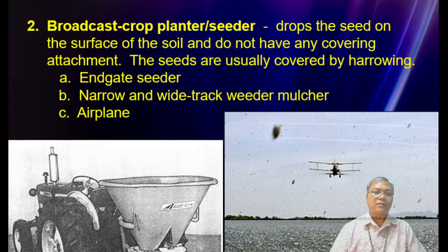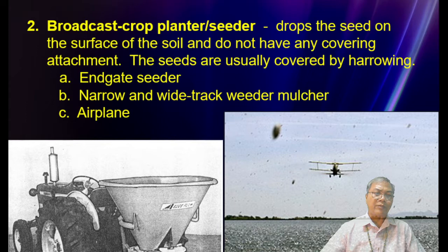For the broadcast seeder, a rotating disc is used for seeds, chemicals, or fertilizer. The disc rotates at a certain RPM, and when material drops onto it, the centrifugal force throws and scatters the seeds outward in all directions.